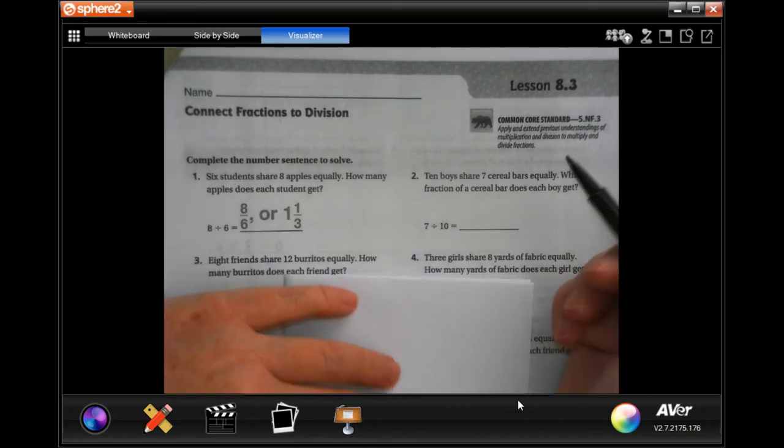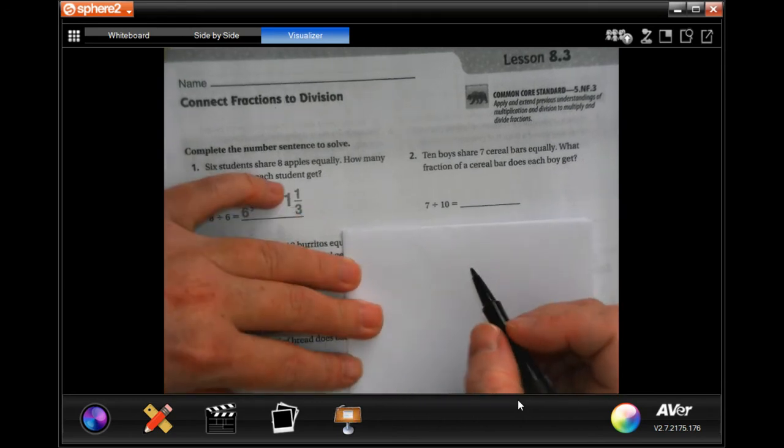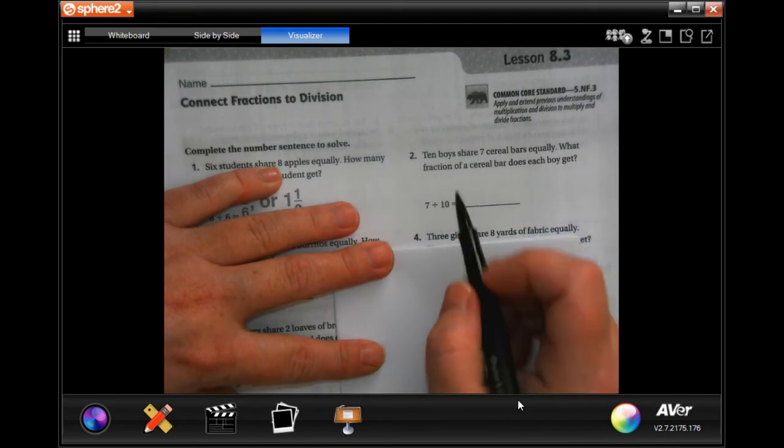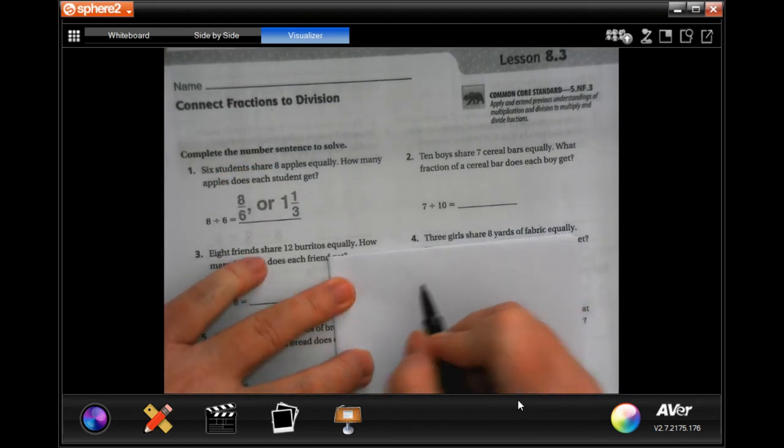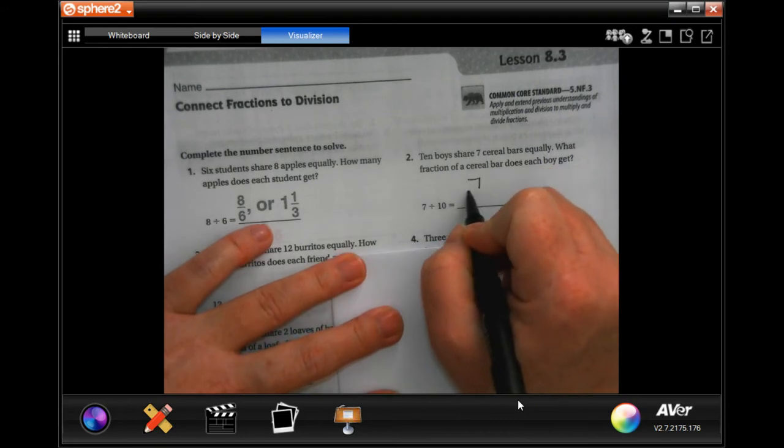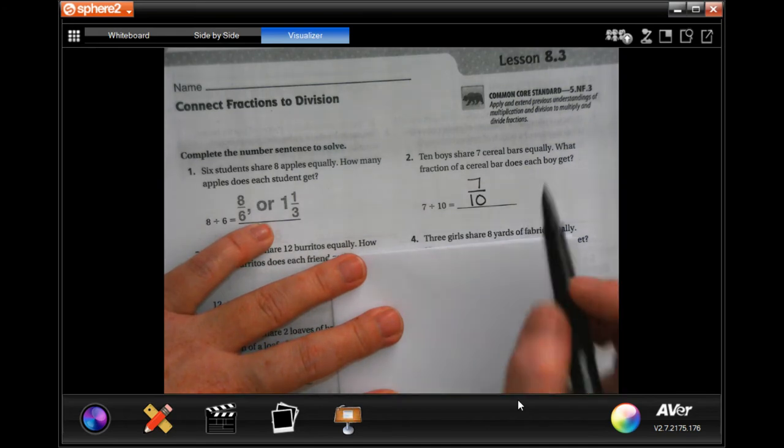We have seven is not bigger than ten, which means we're just going to have a fraction of seven tenths. That's it guys, that's that easy. We can't reduce it.